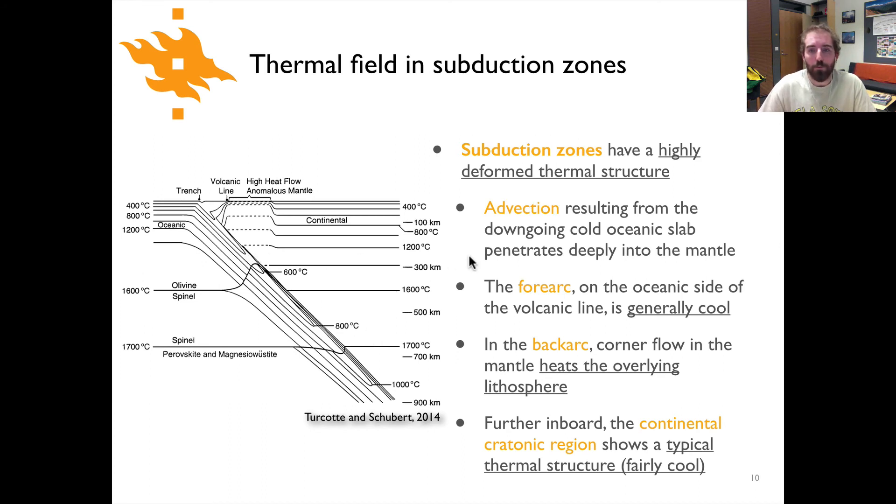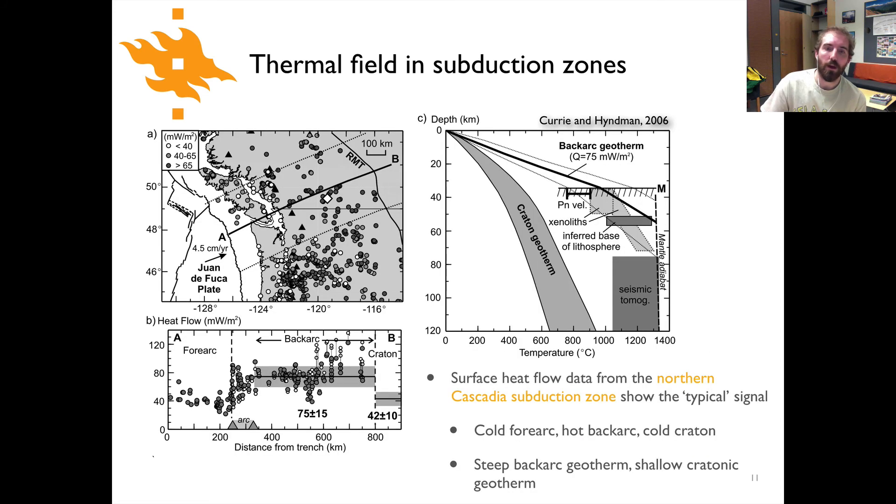When we look at this structure, there's a few places that are useful to consider. First off is the fore arc, which is the part of the subduction zone on the ocean side of the arc volcanoes. The back arc would be on the continental side, and then further inboard we'd have the continental cratonic region. This is some data from the Cascadia subduction zone in the western part of the United States and Canada, western North America. This is Vancouver Island, and Seattle would be somewhere down here.